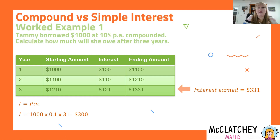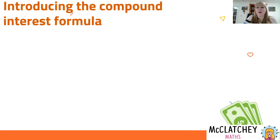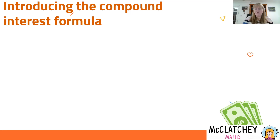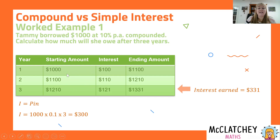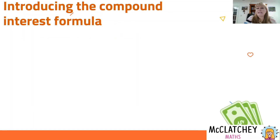Now you might be thinking: do I really want to set up a table for a longer period of time? No — you don't want to apply the interest and add it on repeatedly. What we've effectively done is multiplied by 10% three times for three years. So there's a better way — there's a formula we can use. When you multiply something by 0.1 three times, you've actually multiplied it by 0.1 to the power of three. That's what we're doing with this formula: taking the principal and multiplying it by the interest rate to the power of the number of years.